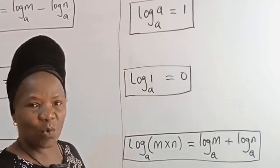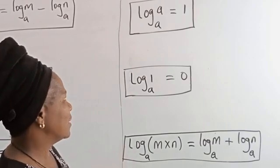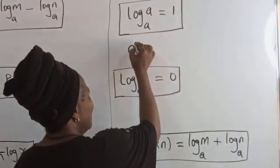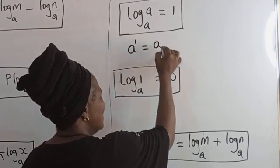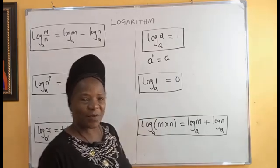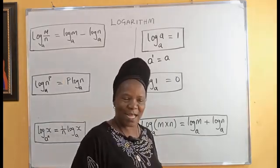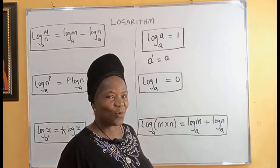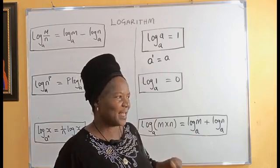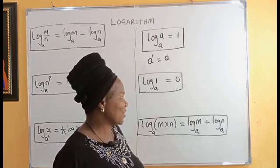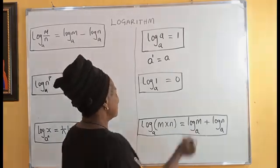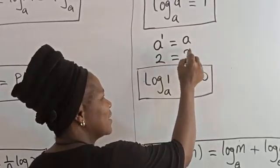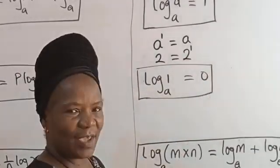Log of A in base A is equal to 1. Why? Because A raised to power 1 is equal to A. Any number raised to power 1 is equal to that number. For example, 2 is 2 raised to power 1.